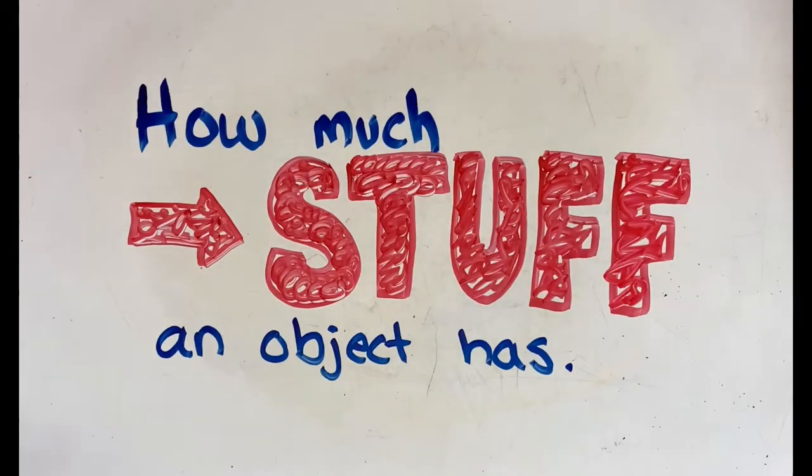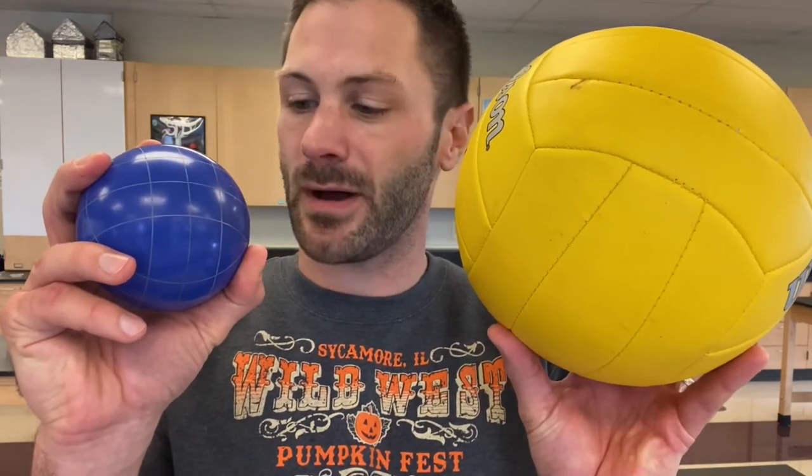But what is mass? Mass is simply how much stuff an object has. Think of this example: a volleyball doesn't have much mass because it's filled with air. Something more massive would be this bocce ball — it's heavier, solid through and through, it has more stuff inside. The volleyball is larger in volume, yet the bocce ball has more mass. So mass is about how much stuff is inside the object.